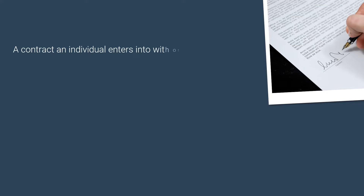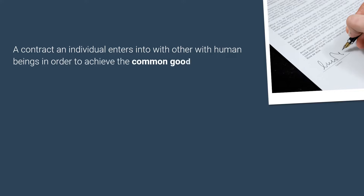According to the social contract theory, society is essentially a contract. It is a contract an individual enters into with other human beings in order to achieve a common goal, or what is called the common good, which could be survival, peace, well-being, etc.